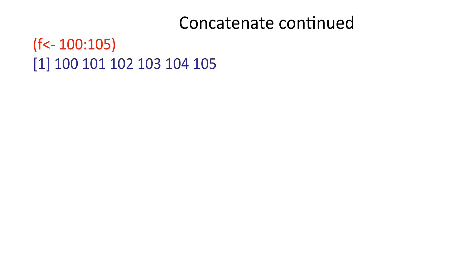Let's continue with concatenate. Let's define f as a list between 100 and 105. It's a nice, neat array. And the important thing to note here is the index itself of a vector can itself be a vector. So, for example, if i is 1 to 3, then f square brackets i are the first three elements. So 100, 101 and 102.